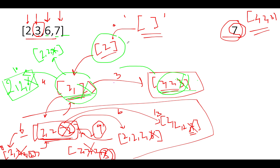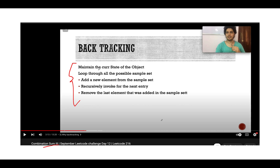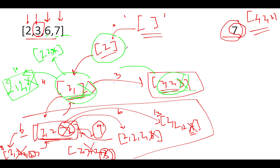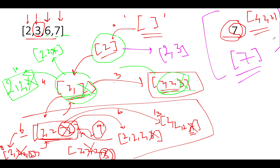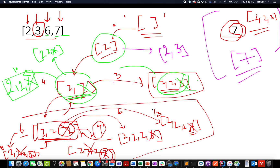For the rest of the graph you can build it yourself — it follows the exact same steps. The pattern is: maintain the current state, loop through all possible elements, add a new element to the subset, recursively invoke for the next entry, and don't forget to remove the last added element. In totality there are two valid combinations: [2, 2, 3] and the singular [7]. Let's walk through the coding section.